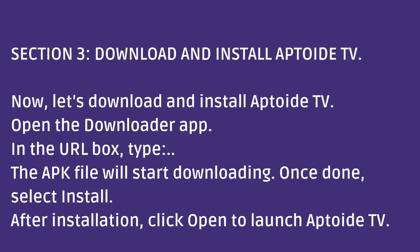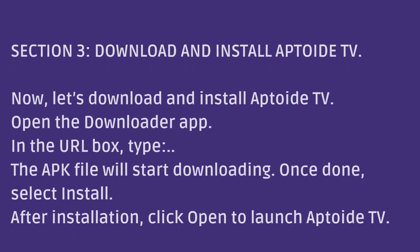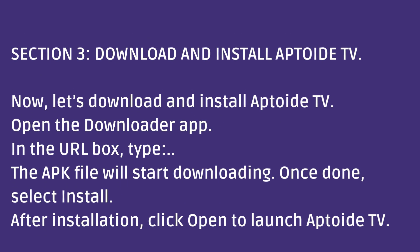Open the Downloader app. In the URL box, type the Aptoide TV URL. The APK file will start downloading. Once done, select Install. After installation, click Open to launch Aptoide TV.